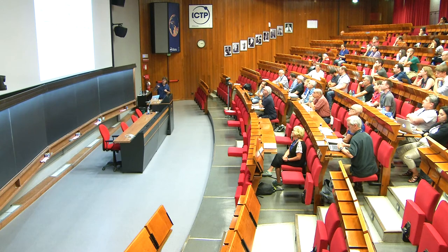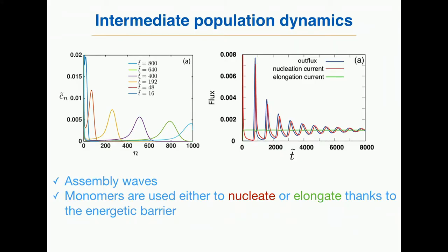The interesting point is that monomers in the solution are used by two processes: nucleation — nucleating an intermediate — and elongation — growing the intermediate just nucleated. Monomers have to be shared between classes that will nucleate or elongate. If you compute along time and compare the elongation current — roughly constant — to the nucleation current, you see that the nucleation current is strongly localized. You nucleate a whole bunch of intermediates, then you stop nucleating, and then the front travels. That is why you observe these assembly waves.